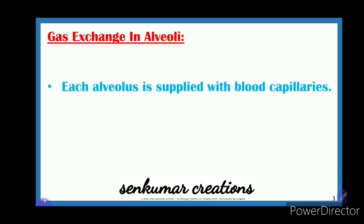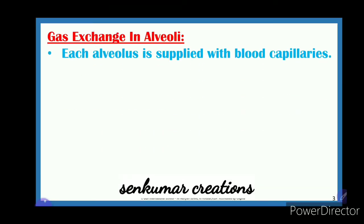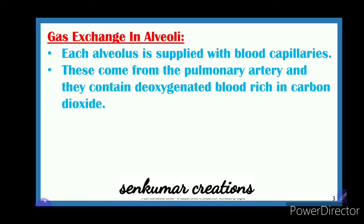Now, gaseous exchange in alveoli — how does it take place? Each alveolus is supplied with blood capillaries. Millions of alveoli are found in the lungs, and each alveolus is responsible for gaseous exchange. It has an increased surface area to increase the rate of diffusion. Oxygen diffuses into the blood capillaries, and carbon dioxide diffuses from the blood capillary into the alveolus.